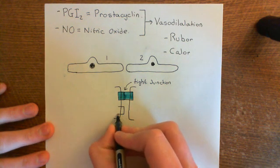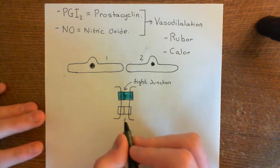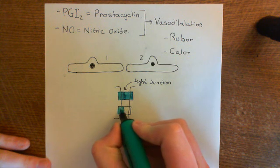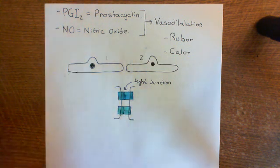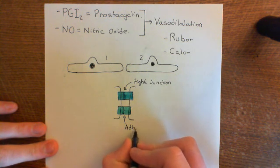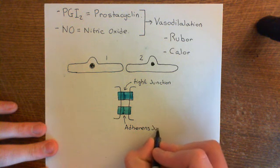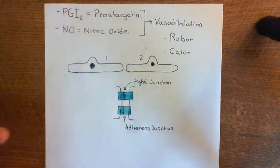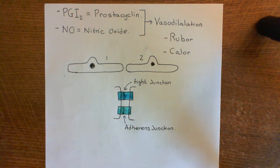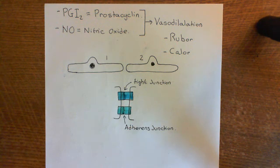In addition, you have another important junction underneath the tight junction — more basally — which is known as the adherens junction. Again, endothelial cell 1 will provide proteins and endothelial cell 2 will have proteins in its membrane which also contribute to this complex, and the two protein complexes join together to make the adherens junction between the two cells. These tight junctions and adherens junctions keep the two membranes very tightly opposed to one another and provide a physical occlusion to things moving out of the blood vessels, keeping endothelia very tight so that things cannot leak out.